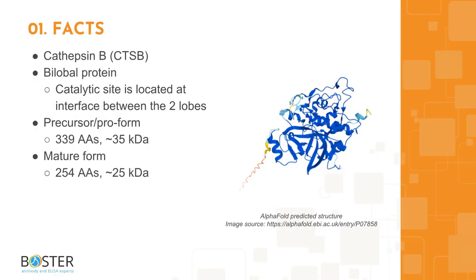Topic 1: Quick Facts About CTSB. Cathepsin B belongs to the papain-like family of cysteine proteases. It is a bilobal protein whose catalytic site is located at the interface between the two lobes. CTSB exhibits both exopeptidase and endopeptidase activity. The precursor of CTSB is 339 amino acids long and runs about 35 kilodaltons on western blot, while the mature form is 254 amino acids long and runs about 25 kilodaltons on western blot.